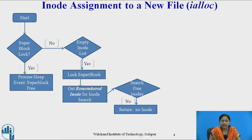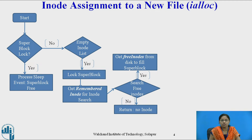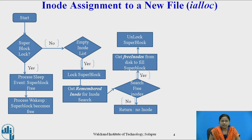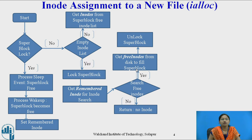If no free iNodes are found on the disk, it returns no iNode to the process. But if free iNodes are found on the disk, it retrieves all free iNodes from the disk to fill the super block, and the super block becomes unlocked. The super block was locked because there were no iNodes present on it. Now that free iNodes are present on the super block, the processes that went to sleep waiting for the super block to become free are woken up. They then set the remembered iNode from the free iNodes now filled in the super block.